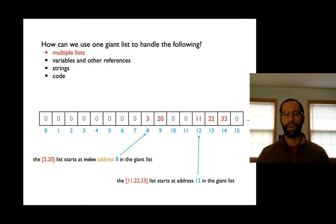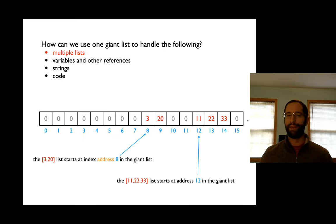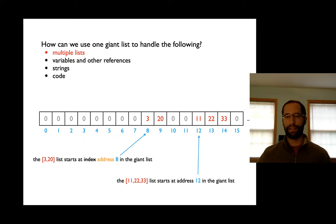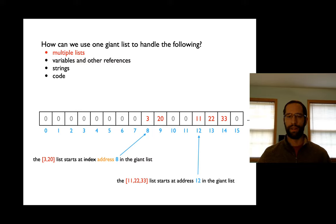How can multiple lists exist inside the giant list? You can carve up the big list — say one list with values 3 and 20 starts at position 8, and another list with 11, 22, 33 starts at position 12. These numbers 8 and 12 are like indexes, but when talking about the big list of a running process we call them addresses. The whole big list is called an address space. Every running process has an address space, and with an address you can find data, including one of those smaller lists.